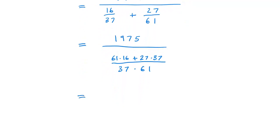If we add together the 61 times 16 plus 27 times 37, we get 1975.